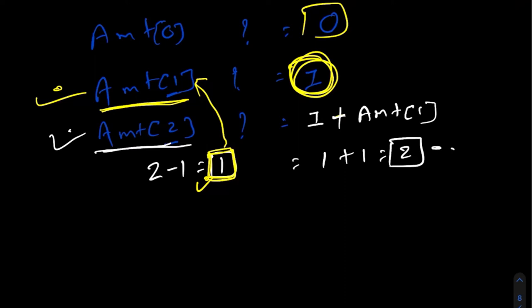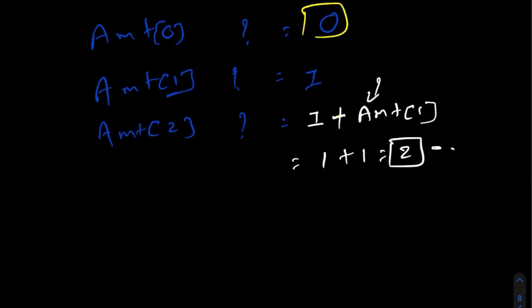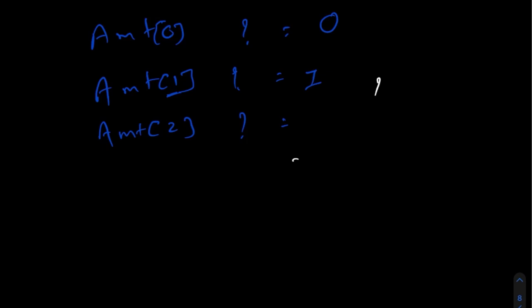The reason I'm emphasizing this so much is that this is exactly the core concept of dynamic programming. We are storing results so we don't repeat calculations — making it a second nature. Now the value for amount two is two. Let's calculate for amount three.